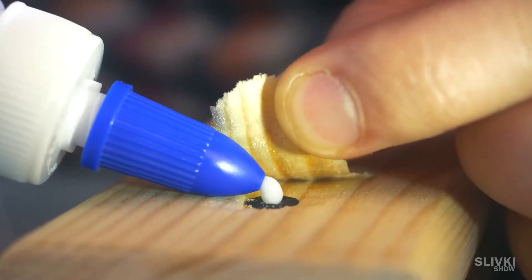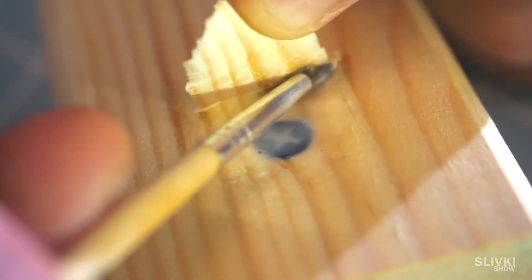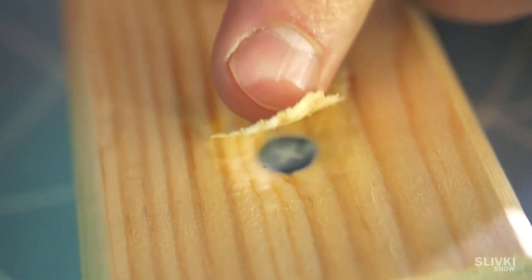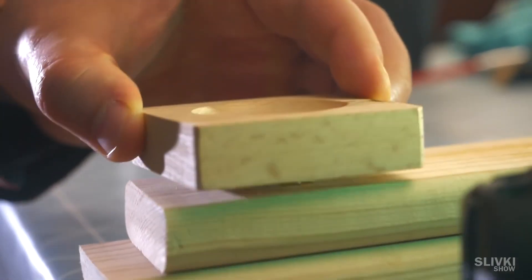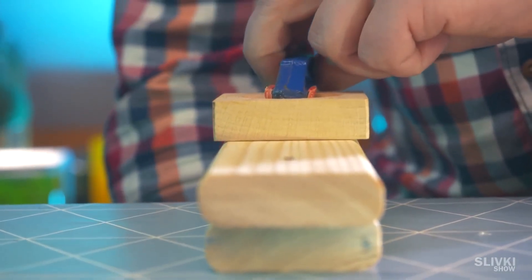Now take glue and using brushes, smudge it on the surface under the tail. Fold it in its place and put a flat object. Pressing with something, we leave it to dry overnight.